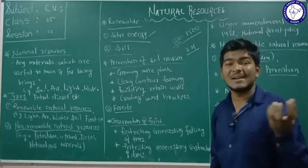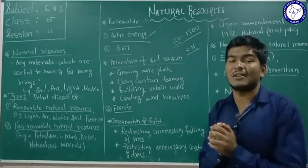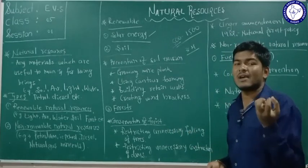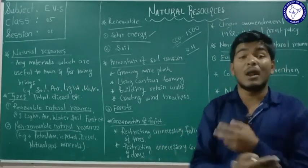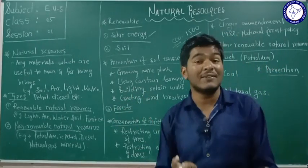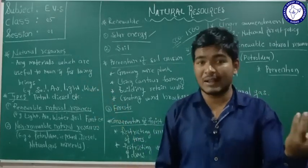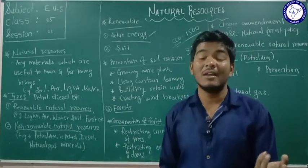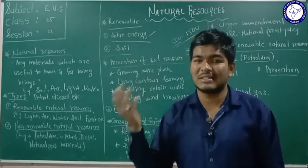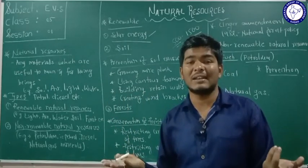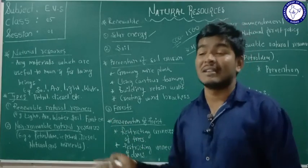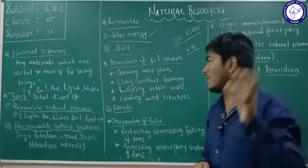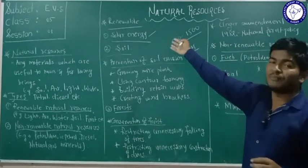Soil is formed from rocks that get broken down and become soil. It is very important, but this soil can be destroyed by natural disasters. We need to prevent soil erosion by taking preventive actions. If the upper layer of soil is blown away completely, it is very difficult to grow plants or crops, and we won't get food materials. The land becomes like a desert where nothing can grow. So we must take precautions to control soil erosion.